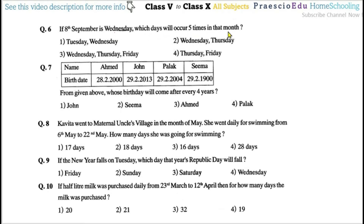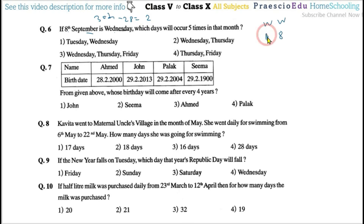Question number six: If 8th September is a Venus day, which day will occur 5 times in that month? Since September has 30 days, and 30 minus 28 equals 2, there are two extra days. The 1st is a Venus day and the 2nd is a Thursday. So Venus day and Thursday each occur five times — option number two is correct.